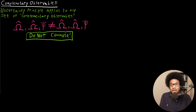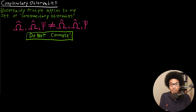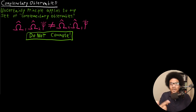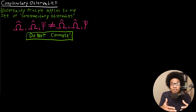You cannot commute these operators in any order that you want. If you come through with omega-2 first, you get a different result than if you come through and operate with omega-1 first. So these are what we call complementary operators, and any observables that correspond to those complementary operators are called complementary observables and are limited by the uncertainty principle.